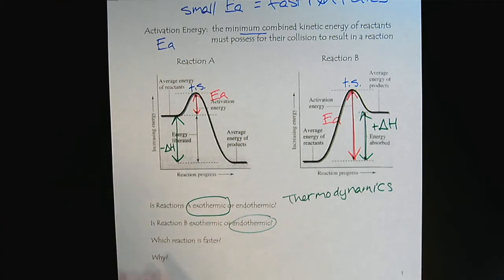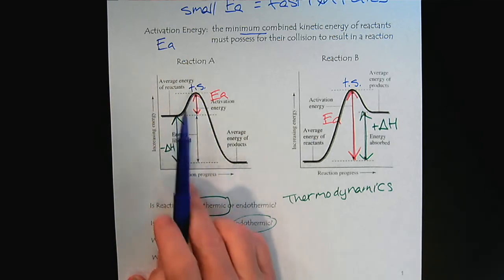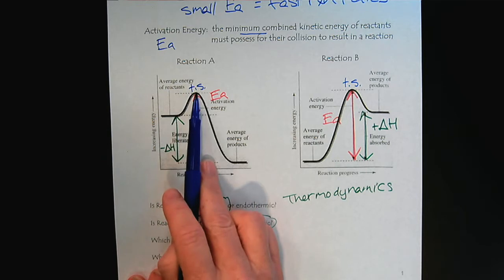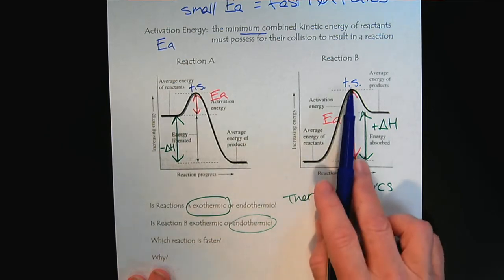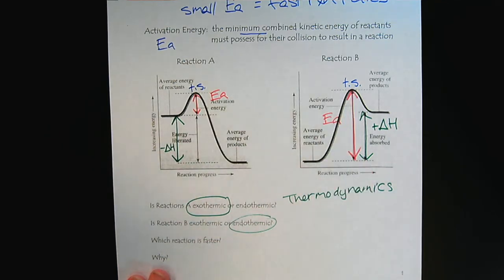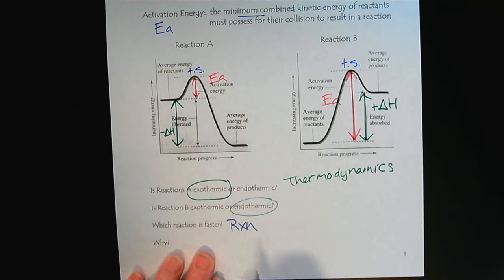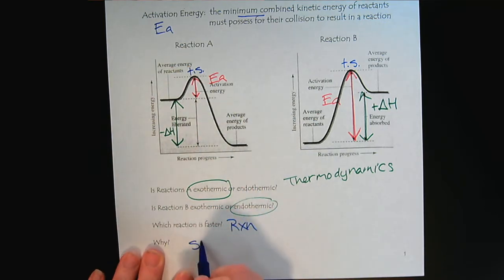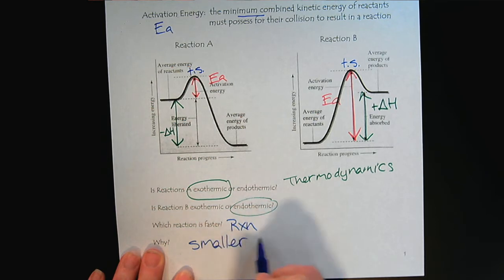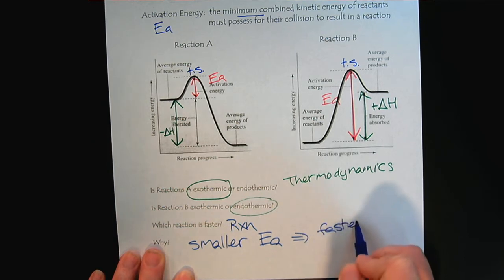Think of it like a race: one team starts at the reactants and only has to race to the top of a small hill, while the competitors start lower and race all the way to the top of a much taller hill. Who gets there faster? Definitely reaction A. A smaller hill to climb, or a smaller activation energy, creates the faster reaction rate.